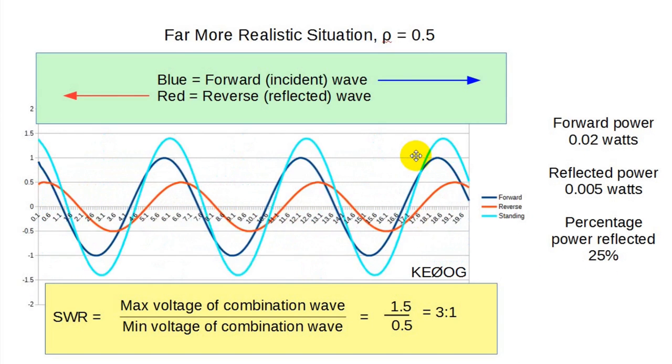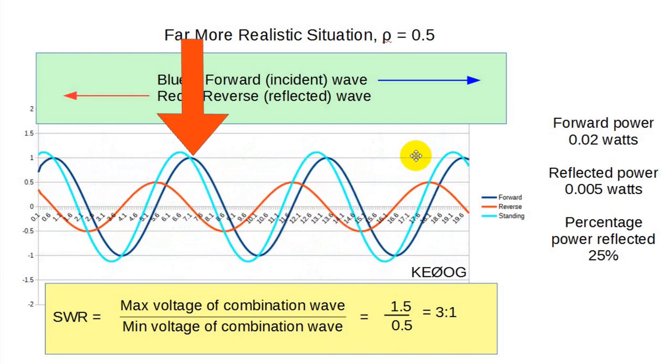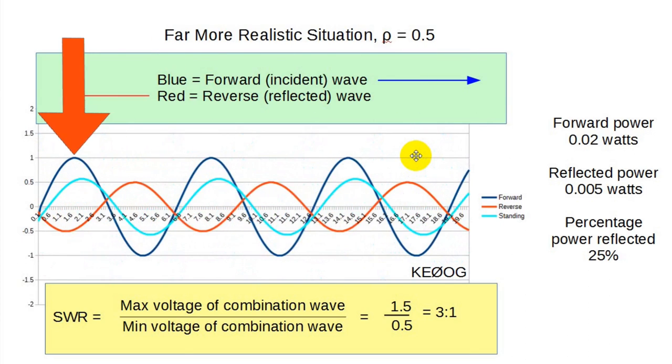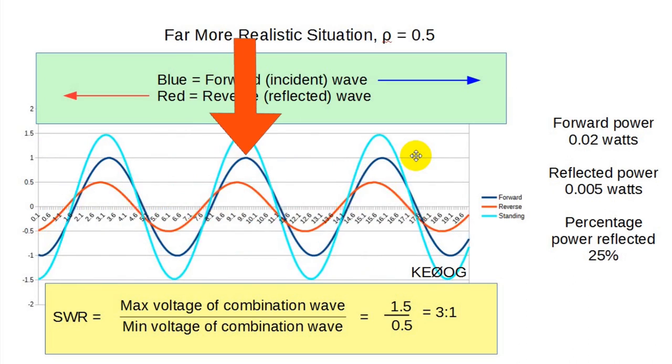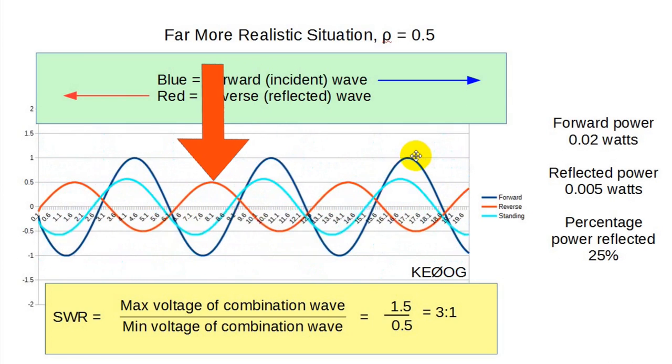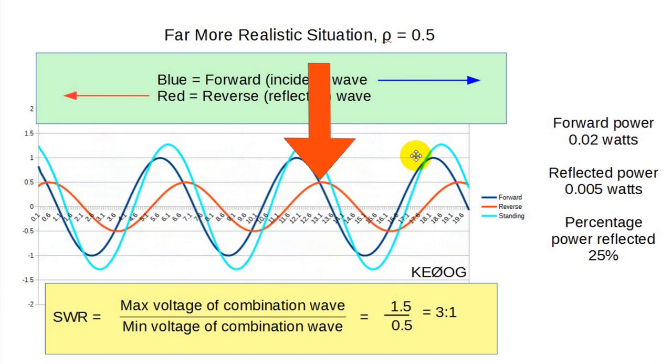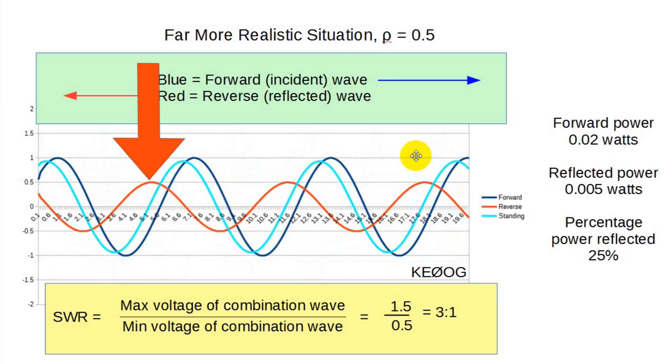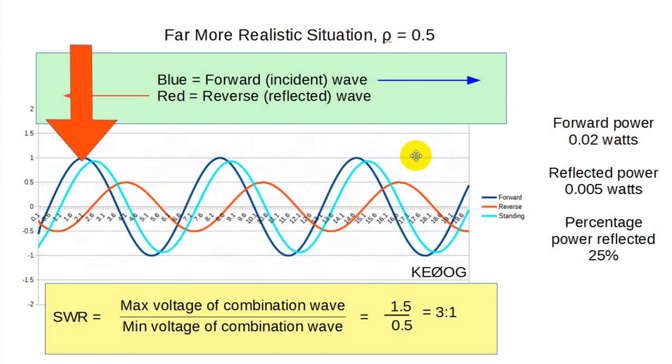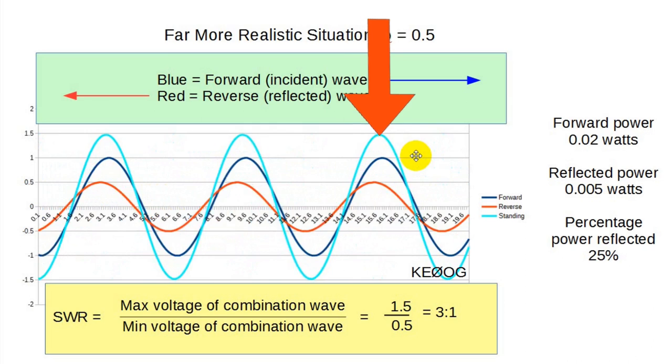I created this animation to show a much more common scenario. The dark blue waveform is the forward or incident voltage waveform going from the transmitter on the left to the antenna on the right, as shown by the red arrow that follows along. Its peak value is 1 volt. The red wave is the voltage of the reflected wave traveling from the antenna input back toward the transmitter, as shown by the red arrow. The value is one-half that of the incident wave, or a half volt in this case. Thus, the reflection coefficient is 0.5, or one-half. The cyan, or light blue, waveform is the instantaneous sum of the incident and reflected waveforms. Let's study this.